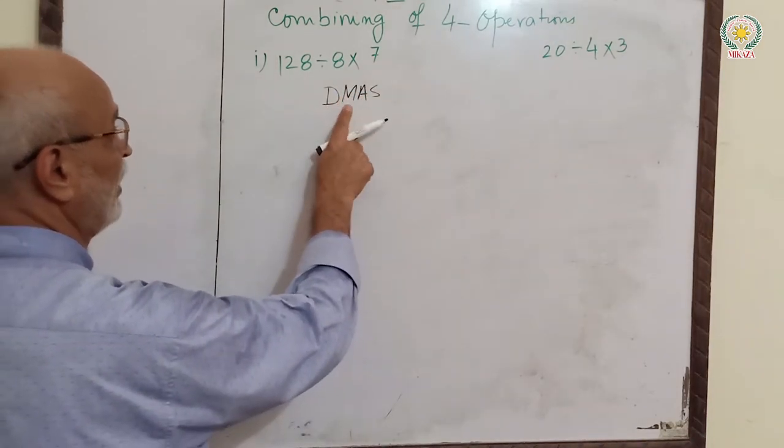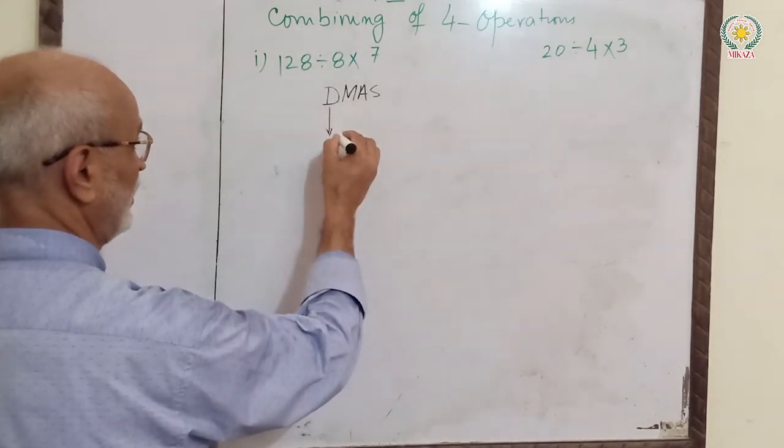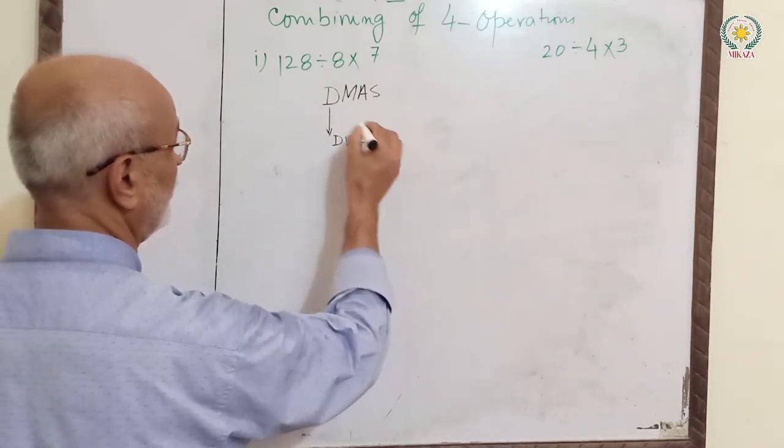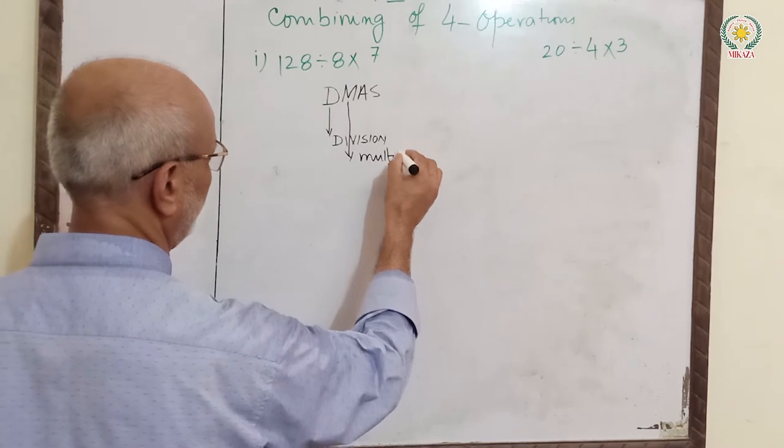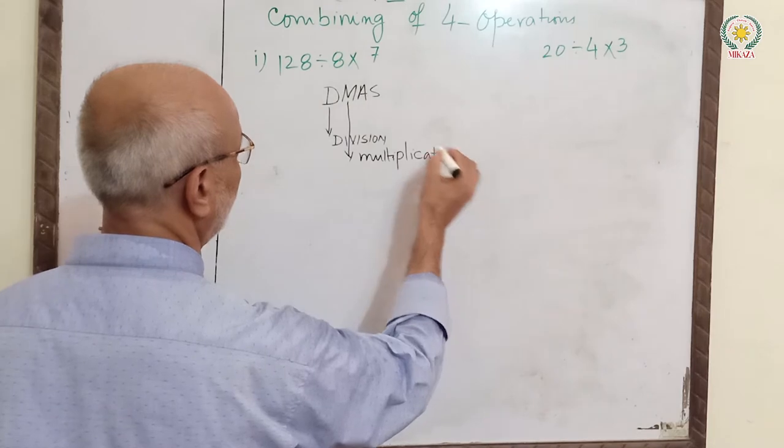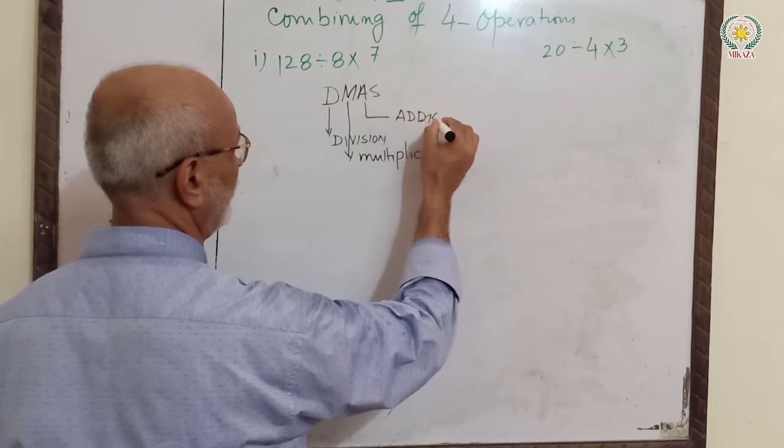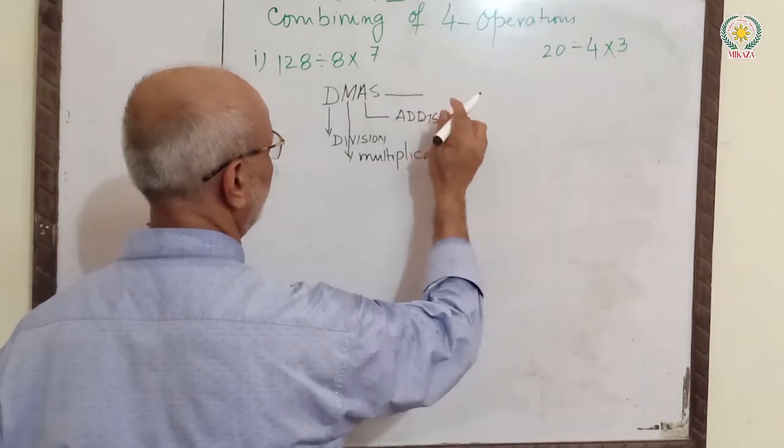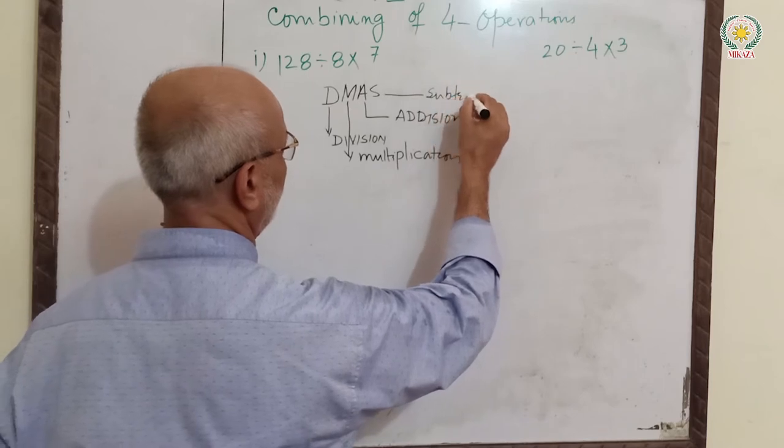DMAS stands for Division, Multiplication, Addition, and Subtraction. D for division, M for multiplication, A for addition, S for subtraction.